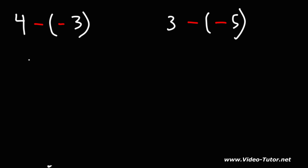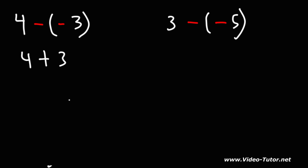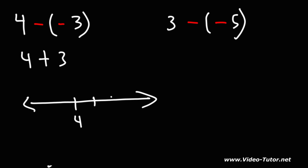4 minus negative 3 — we can change these two negative signs into a plus. This is equivalent to 4 plus 3. Now to perform the operation, we can use a number line. Starting from 4, we're going to add 3. When adding, you want to move to the right on the number line, and when subtracting, you move to the left. So we travel three spaces to the right, which takes us to 7. So 4 plus 3 is 7.